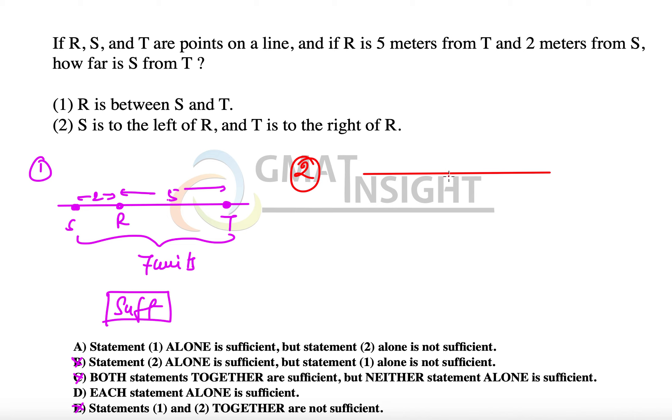S is to the left of R and T is to the right of R. So we have R here. T is to the right and the distance between R and T is 5, and S is to the left of R. The distance between S and R is 2 units. By drawing the figure we understand that the distance between S and T has to be 7 units.